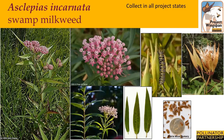Asclepias incarnata, or swamp milkweed, as its common name implies, prefers moist soils and can be found near bodies of water, in wet meadows and prairies. The plants can grow up to six feet tall, with a single reddish stem growing from the base that branches into multiple stems towards the top. Its leaves are opposite and up to six inches long — narrow and lance-shaped, which distinguishes it from other milkweeds. Its flowers range from bright pink to magenta, red, and cream, forming open clusters at the top of the stems. They bloom July through September, and their fruit forms smooth, narrow, tear-shaped pods about four inches long that will turn brown when ripe.